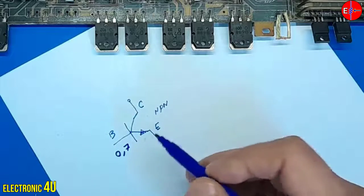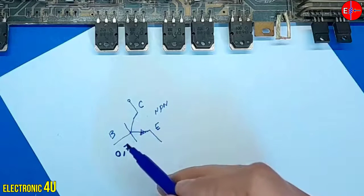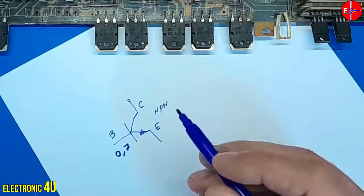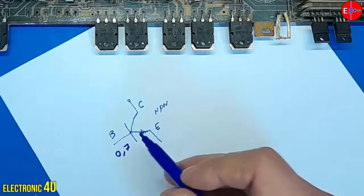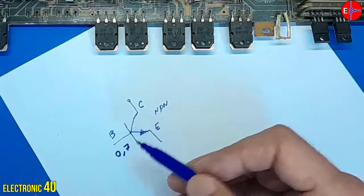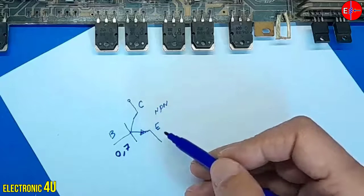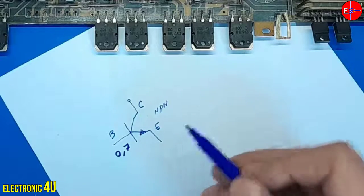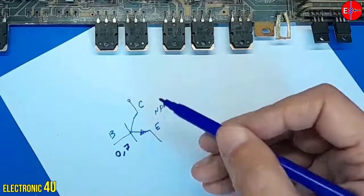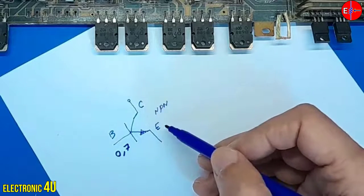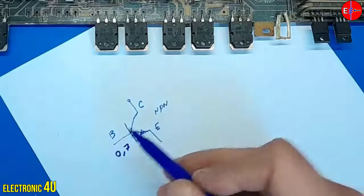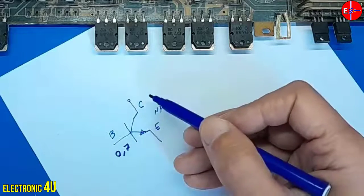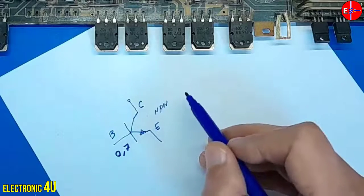We have to increase the voltage on the base. That is, increase the potential difference between the base and the emitter. In this case, the base current increases, and the current passing through the collector and emitter also increases. But there is one important point: the voltage between the collector and the emitter is opposite to the current between the base and the collector. So if the voltage increases, the current decreases.